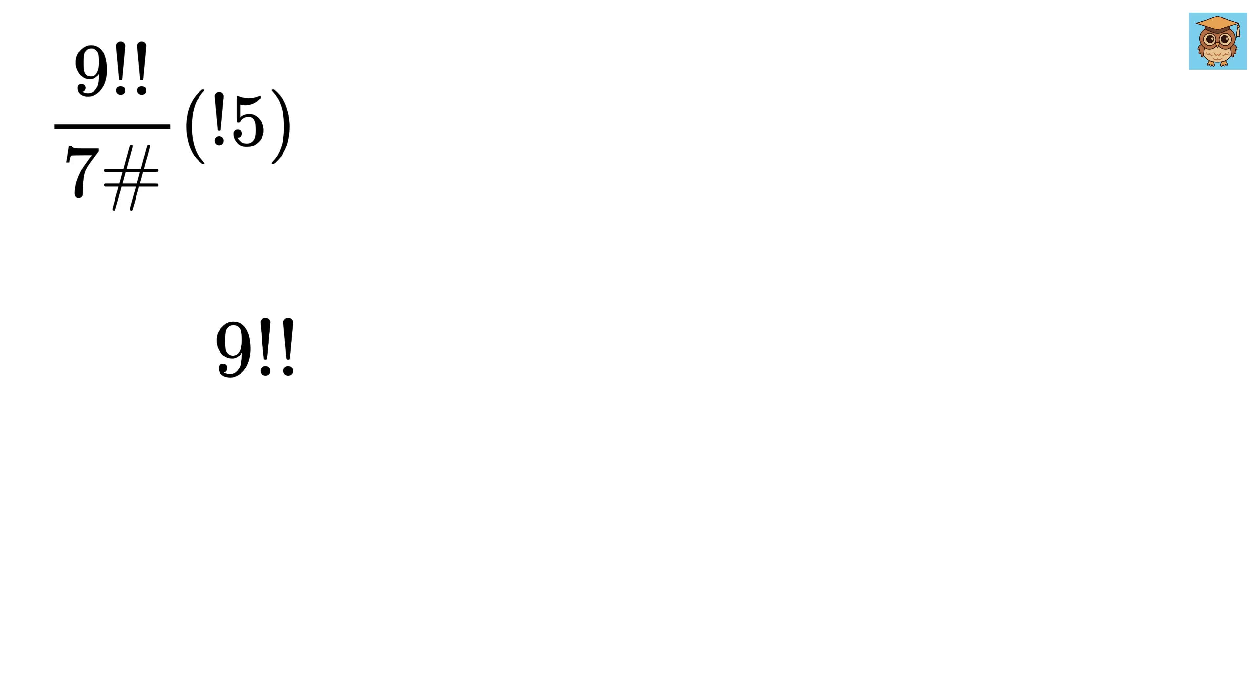First, we need to understand what 9 with a double exclamation mark means. This is called a double factorial. And for an odd number like 9, it's the product of all odd numbers from 9 down to 1. So, we multiply 9 times 7 times 5 times 3 times 1. Get rid of this one, as it contributes nothing to the product.